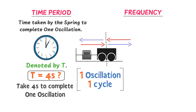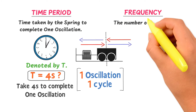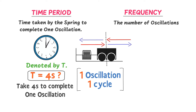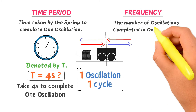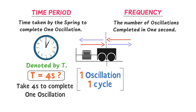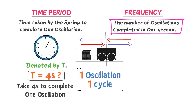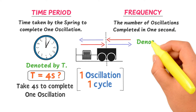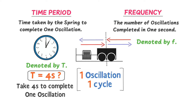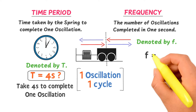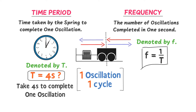Frequency is defined as the number of oscillations or cycles completed in one second. Frequency is denoted by small f. Note that frequency is equal to the reciprocal of time period.